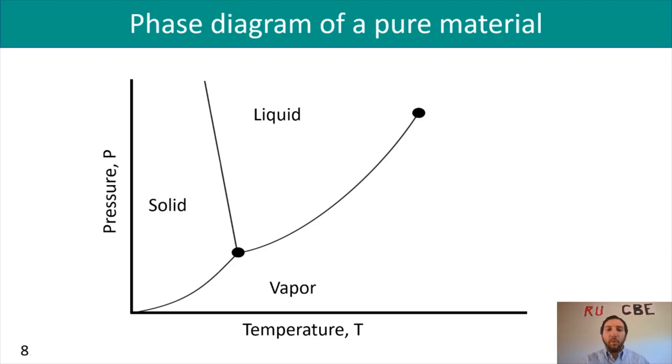There is a point, as you might notice, where I can actually have all three components: solid, liquid, and vapor. That point is called the triple point. Similarly, we just mentioned that there's also a point where I can no longer have a vapor when I'm at my critical temperature. If I go above that, I can no longer have a vapor. That is shown over here on the phase diagram. If I go above that critical point temperature-wise, I'm going to have a gas, no matter what.